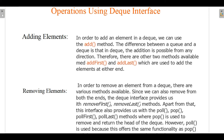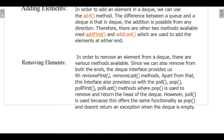Now let's talk about operations using the Deque interface. The first operation is the add operation. To add an element in a Deque we can use the add method, which comes from the Collection interface. Since Deque also implements Queue, there are two additional methods: addFirst and addLast. These methods help to add elements at either end of the Deque.